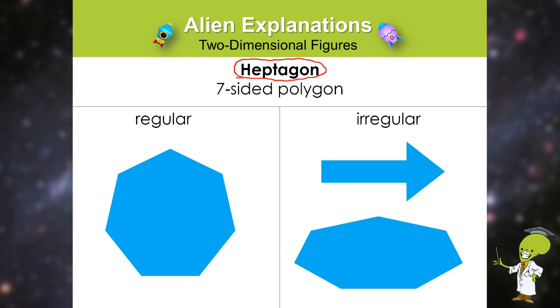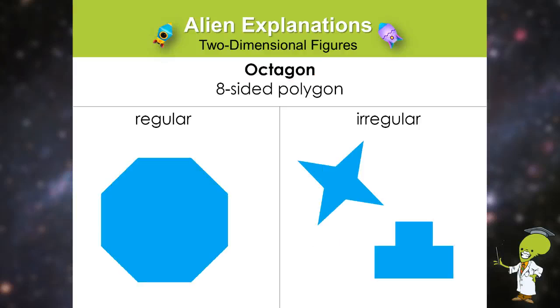The next polygon, the eight sided polygon, is the octagon. The easiest way to remember octagon is octopus. An octopus has eight legs. An octagon has eight sides.